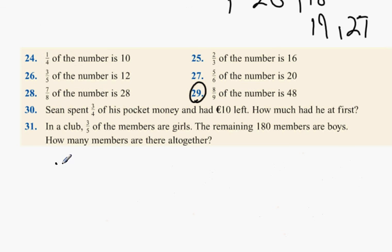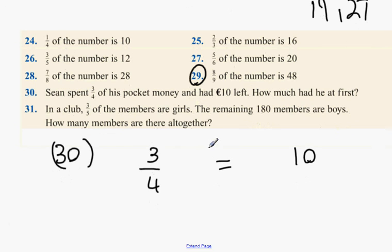Now, number 30. Sean spent three quarters of his money and had 10 euro left. How much did he have at first? How do you do it, Luke? Three quarters minus a quarter. Three quarters of your money is 10. Sean, how do you get the full amount? Well, three quarters of his pocket money is 10 euro. How do I find the total amount? 10 euro left. Oh, 10 euro left. Sorry. My fault. Sorry, you are perfectly right.